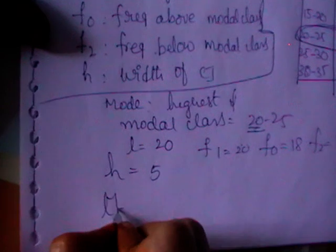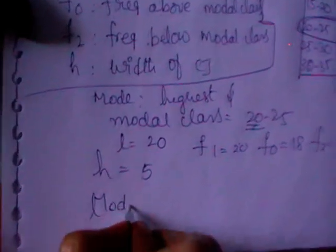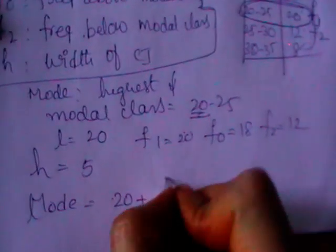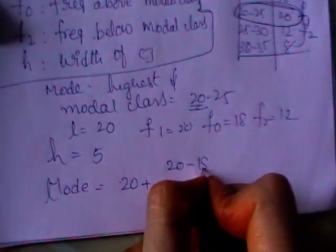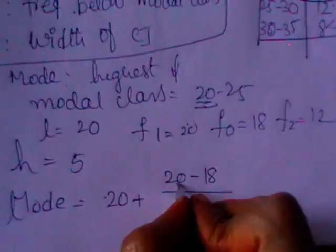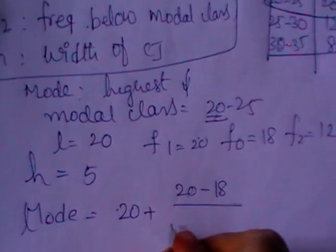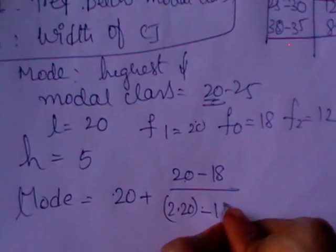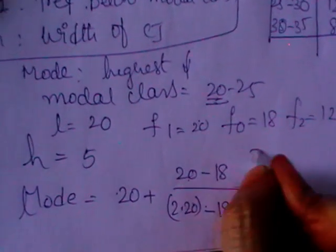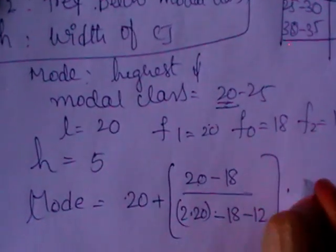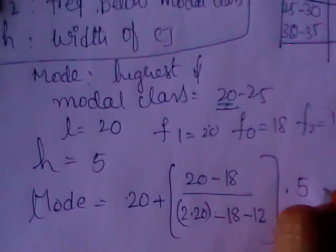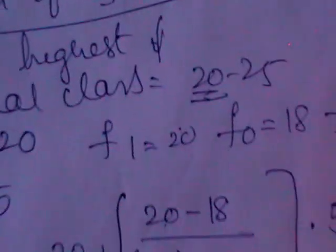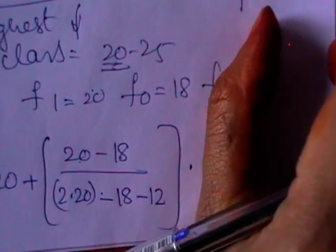Mode is equal to L plus (F1 minus F0) divided by (2F1 minus F0 minus F2) into H, which is nothing but 20 plus (20 minus 18) divided by (2 into 20, minus 18, minus 12) into 5. On simplification, you will get this value as 21. This is the way you calculate the modal class.